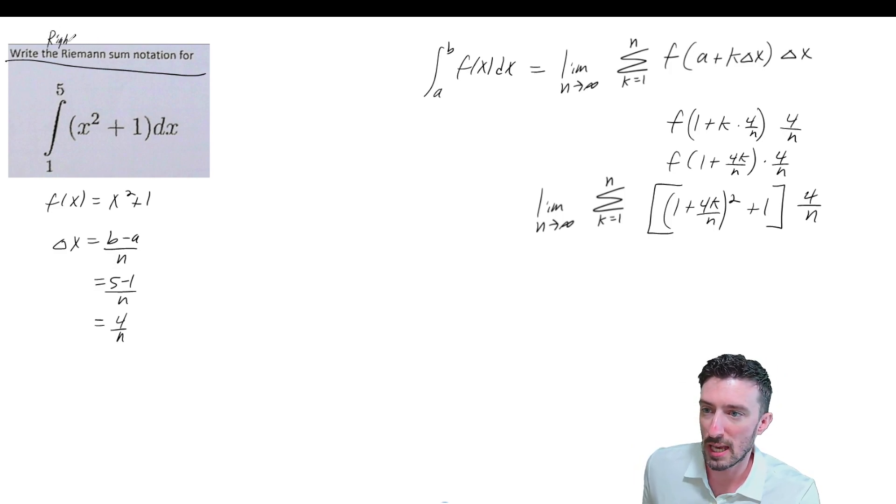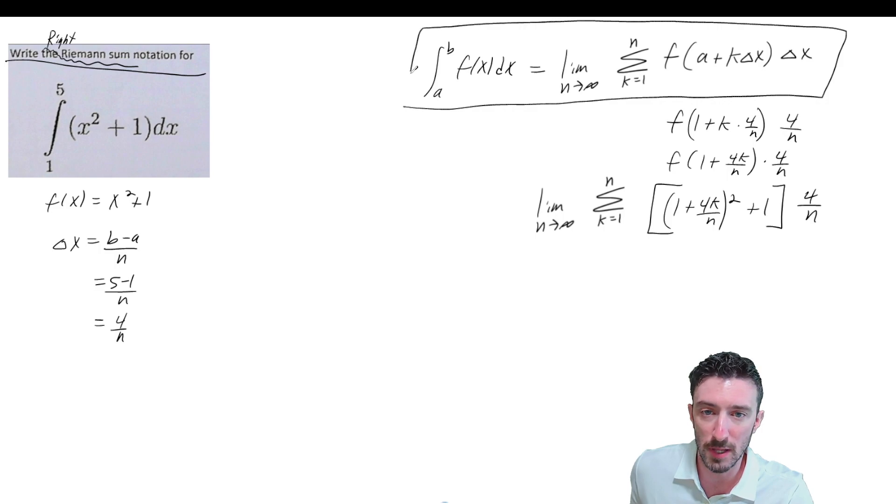One way to write the Riemann sum notation would be by using a right Riemann sum. It didn't specify whether we would use right or left. If you want to use a right, then this is going to be your formula for changing your definite integral into a right Riemann sum.